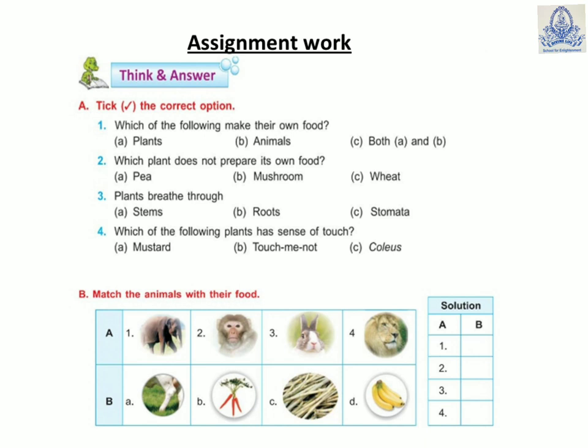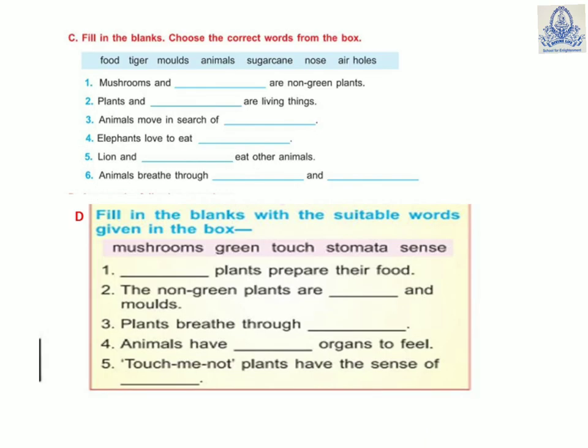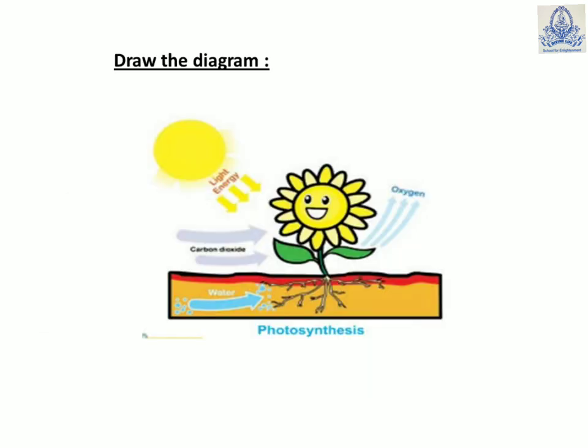Here I have given you some assignment work. The first question is MCQ; the second is match the column — write down the names from the pictures and give the solution. Questions C and D are fill-in-the-blanks; options are available, but read the lesson carefully and write the answers. Draw this diagram and color it in your notebook.